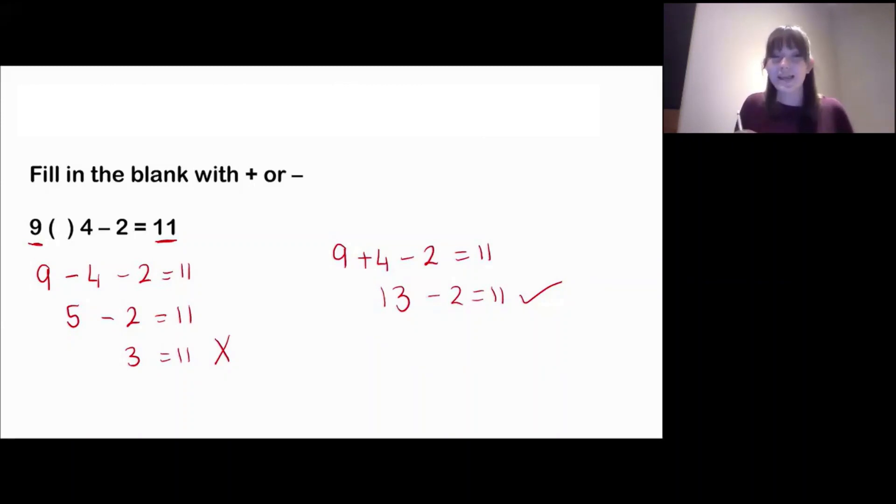So if all we did was take away, we already have take away 2. If we did take away 4 as well, well, we know that when we do take away, that makes our number smaller. So there's no way that we could take away 2 numbers from the number 9 and get a number that was bigger than 9, could we? Because take away makes numbers smaller.